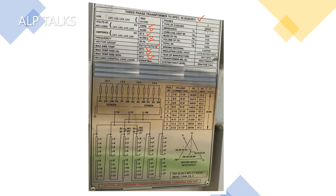This is as per IS. Now, no load loss and load loss — this is a common trend in solar power transformers: 5 and 50 kW. Generally 0.1% and 1% are the losses. Some people will say together 1%; in that case 0.1% and 0.9% will be the no load and load loss contribution. This is a 3 phase transformer.